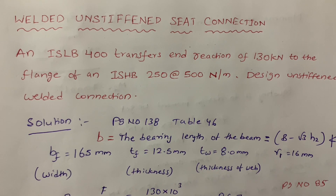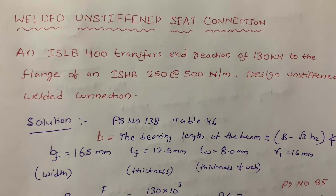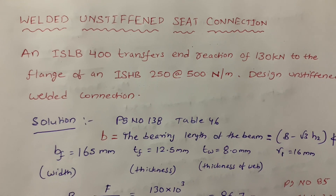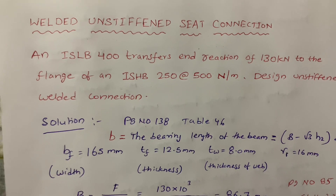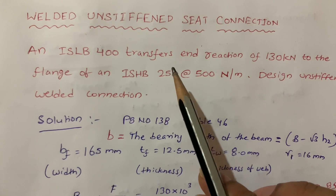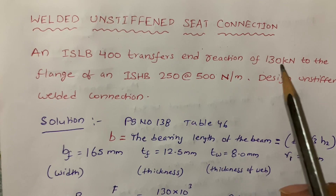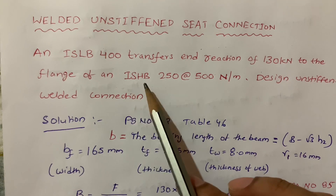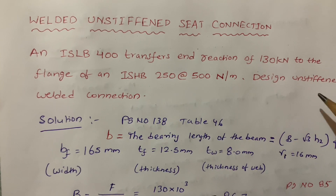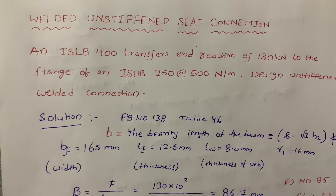Hello everyone. In this video I am going to explain about welded unstiffened seat connection. The given question is ISLB 400 which transfers the end reaction of 130 kN to the flange of ISHB 250. For this we are going to design an unstiffened welded connection.